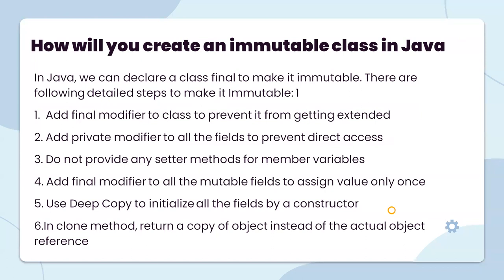How will you create an immutable class in Java? In Java, we can declare a class final to make it immutable. The steps are: add a final modifier to the class to prevent it from being extended; add private modifiers to all fields to prevent direct access; do not provide any setter methods for member variables; add final modifiers to all mutable fields to assign values only once; use deep copy to initialize all fields via a constructor; and return a copy of an object instead of the actual object reference.